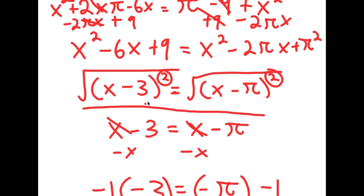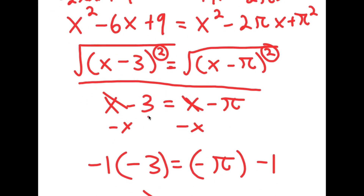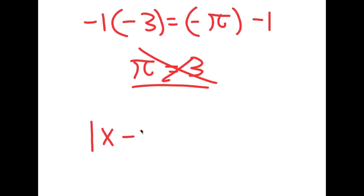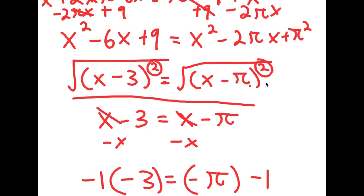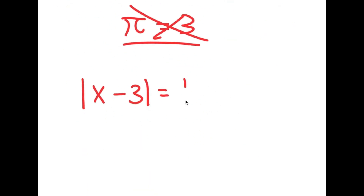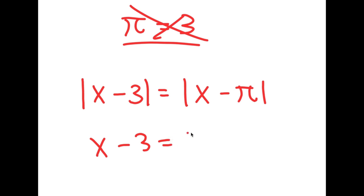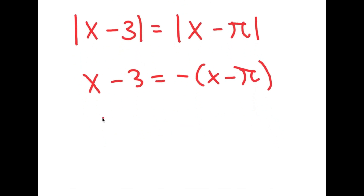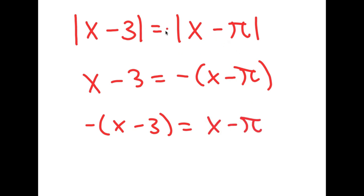This is actually not true. The square root of (x minus 3) squared isn't equal to x minus 3 — it's equal to the absolute value of (x minus 3). And the same goes for the square root of (x minus pi) squared: it's not equal to x minus pi, it's equal to the absolute value of (x minus pi). Because we're taking absolute values, I get |x minus 3| equals |x minus pi|, which means x minus 3 equals negative(x minus pi), or negative(x minus 3) equals positive(x minus pi).